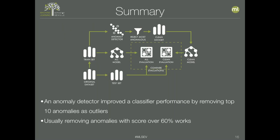So with that workflow we were able to improve classifier performance by removing 10 anomalies. In general, by experience, removing anomalies with a score over 60% often helps classifiers work better.